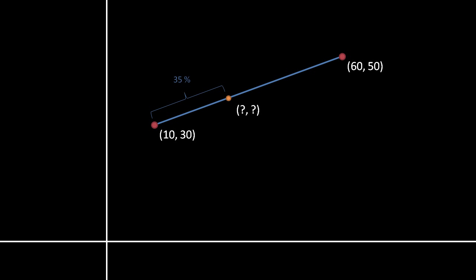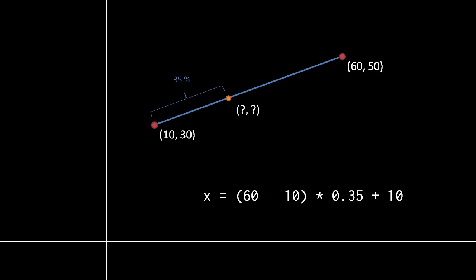First, consider how interpolation works along a straight line. To compute the coordinate that lies 35% along the way from (10, 30) to (60, 50), we don't have to find the equation of the line. Instead, we can independently find 35% of the horizontal distance and 35% of the vertical distance. So if 10 is x1 and 60 is x2, we find x of the new coordinate by the formula x = (x2 − x1) × alpha + x1, where alpha is the interpolation factor 0.35. To find the y value, the formula is just the same but with y's instead of x's.